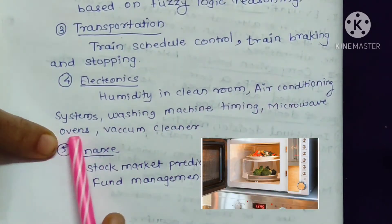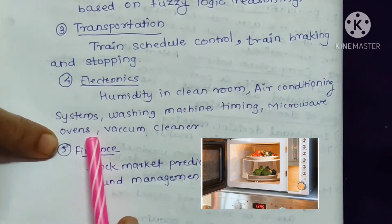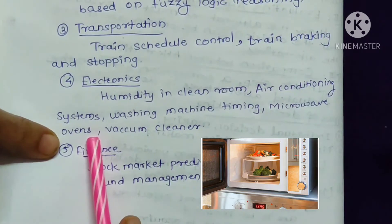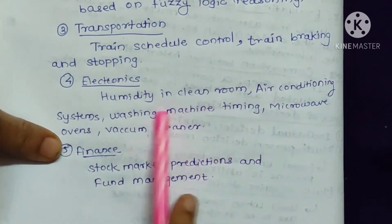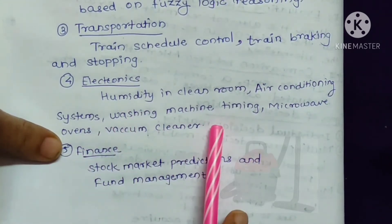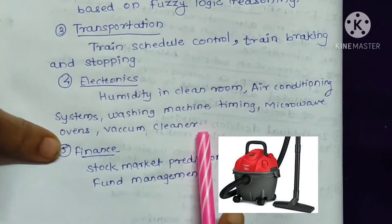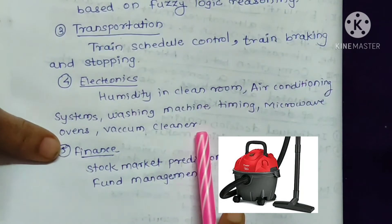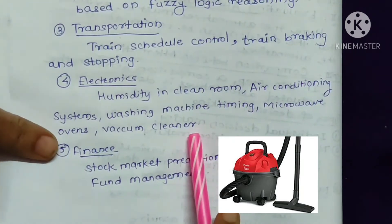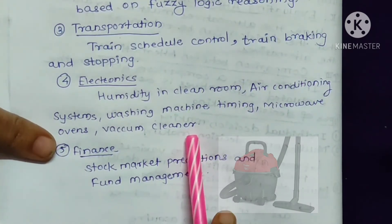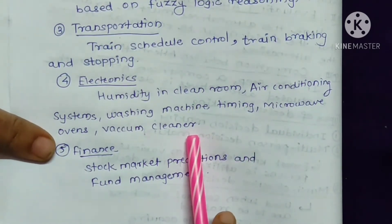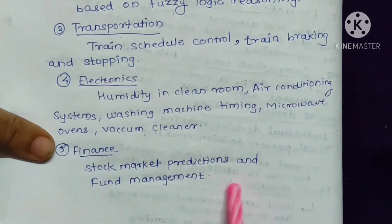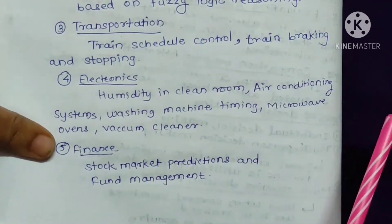A microwave oven decides the timing for heating food based on fuzzy logic. A vacuum cleaner system decides the intensity of cleaning based on fuzzy logic. These are the various areas where fuzzy logic is used.